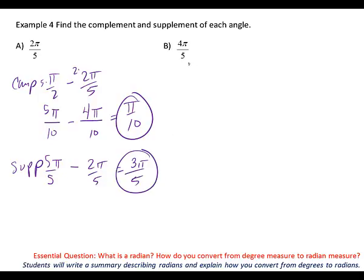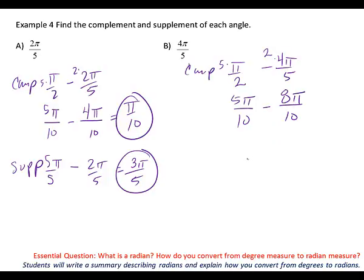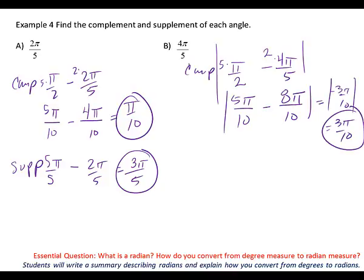So, 4π over 5 — for the complementary angle, what do I subtract from? π over 2. And I'm going to subtract 4π over 5. What's my common denominator? 10. I need to multiply this one by 5, so I get 5π over 10. And I need to multiply this one by 2. There's a problem with this — don't we get a negative angle? What we should be doing is put absolute values around it. If you get a negative because of subtraction, it doesn't matter which way we do it; we can always just take the absolute value. So, we end up with negative 3π over 10, and the absolute value of it would be 3π over 10.